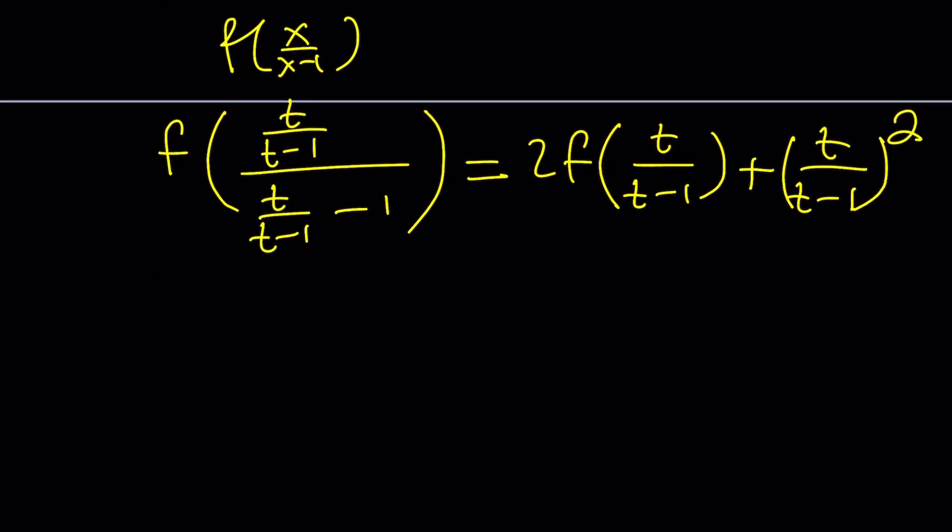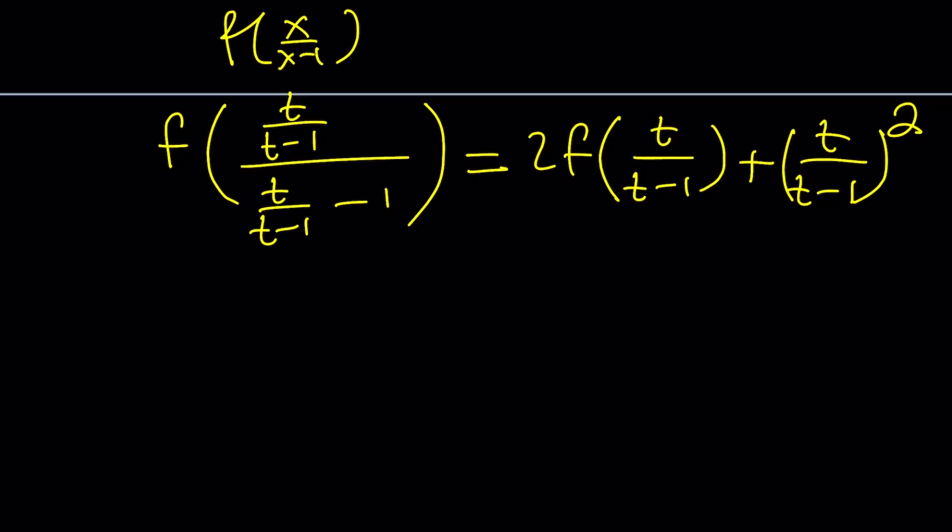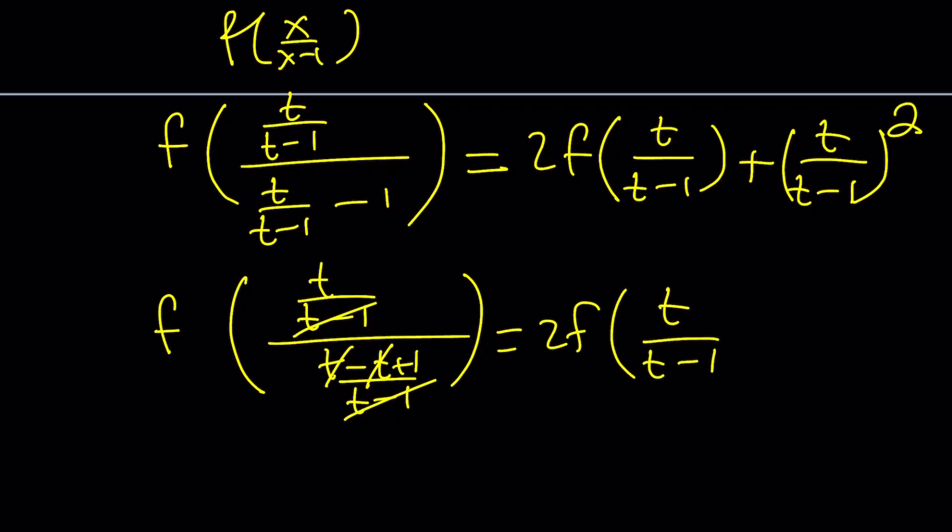So, you might be questioning this, like why on earth we're doing this because this looks more complicated. But don't worry. This is going to simplify a great deal. You'll see in a little bit. So, let's go ahead and simplify the top and the bottom as much as possible. So, I can kind of make a common denominator. t minus t plus 1 divided by t minus 1. And notice that t minus 1 cancels out. And we end up with, and of course, these t's cancel out. t divided by 1, we get f of t. Nice. And on the right-hand side, we get what we get. That's it.